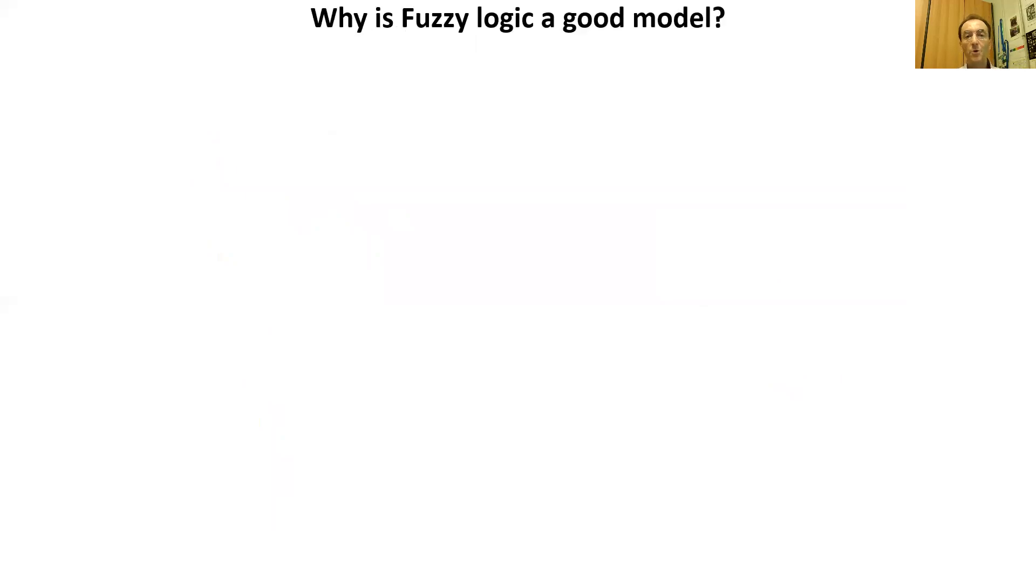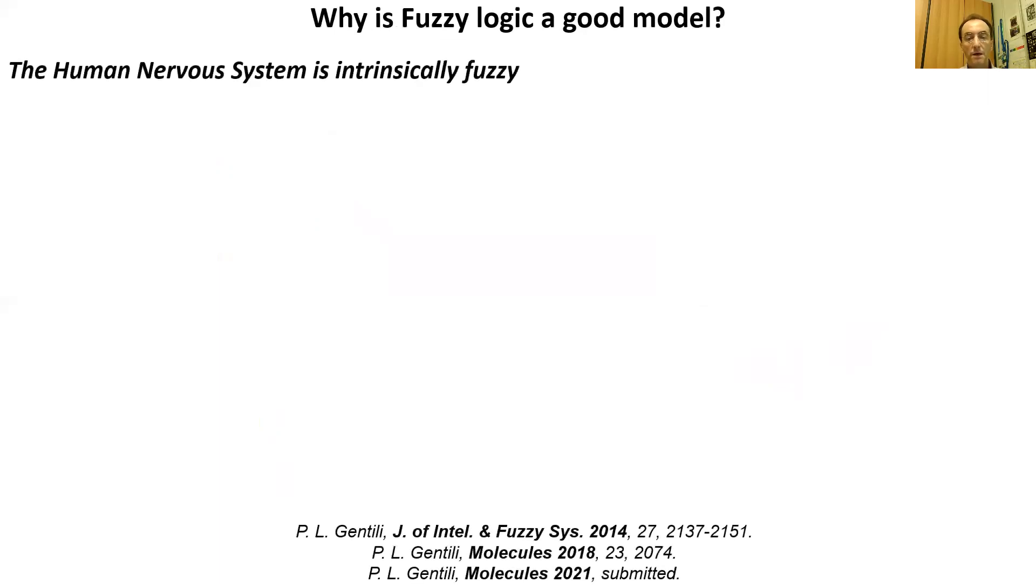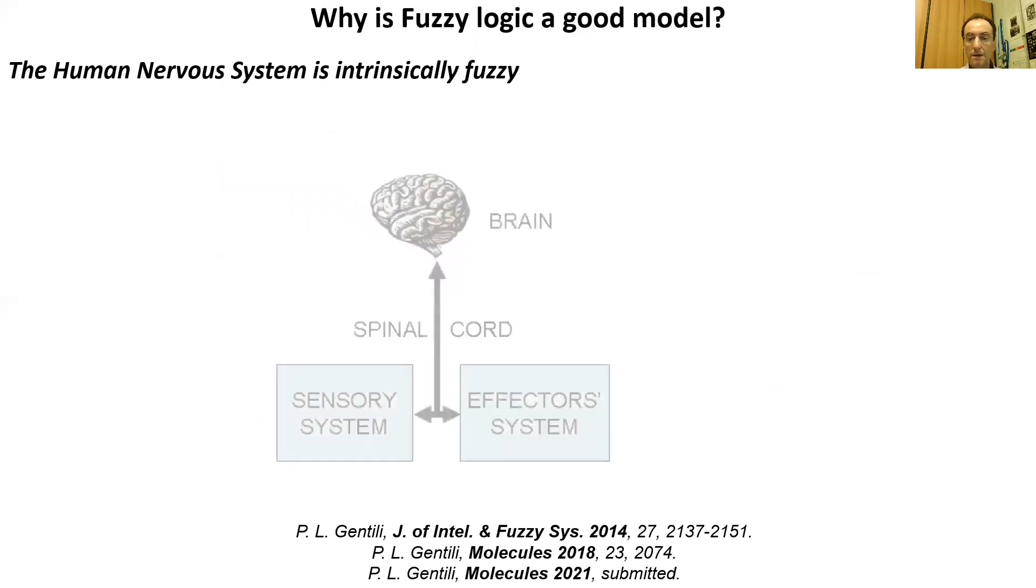Why is fuzzy logic a good model of human capability to compute with words? In my view, because our human nervous system is intrinsically fuzzy. The human nervous system comprises three elements: the sensory system, the central nervous system, and the effector system. The sensory system catches physical and chemical signals and transduces them into electrochemical signals that are sent to the brain through the spinal cord. Into the brain, such signals are integrated and processed. Information is generated and decisions are taken. The outputs of the cerebral computations are electrochemical commands sent to the components of the effector system, which are glands and muscles.